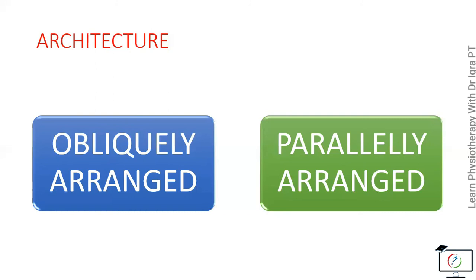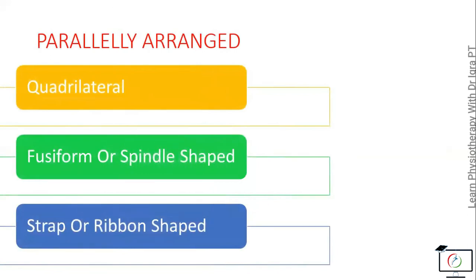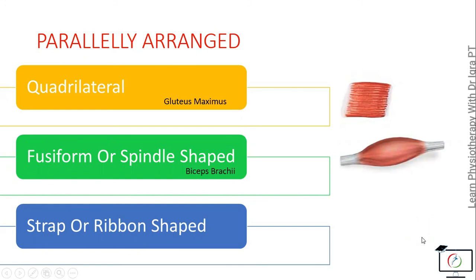In parallelly arranged muscles, they are quadrilateral, fusiform shaped, or strap shaped. The example of the quadrilateral muscle is the gluteus maximus, the fusiform or spindle shaped is the biceps brachii, and the strap shape or ribbon shaped is the rectus abdominis.